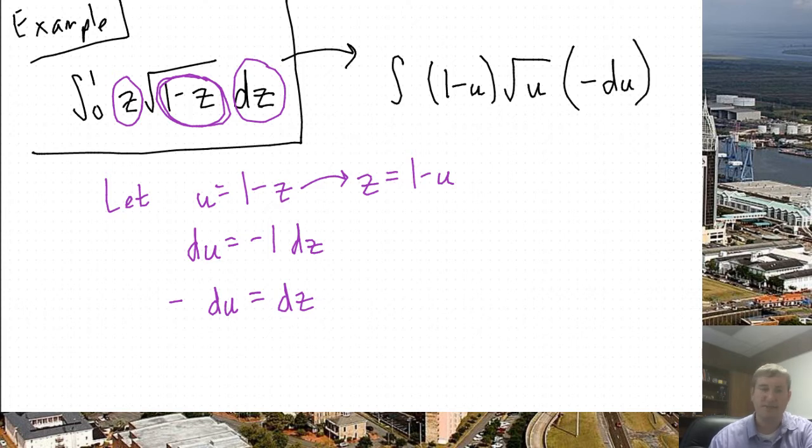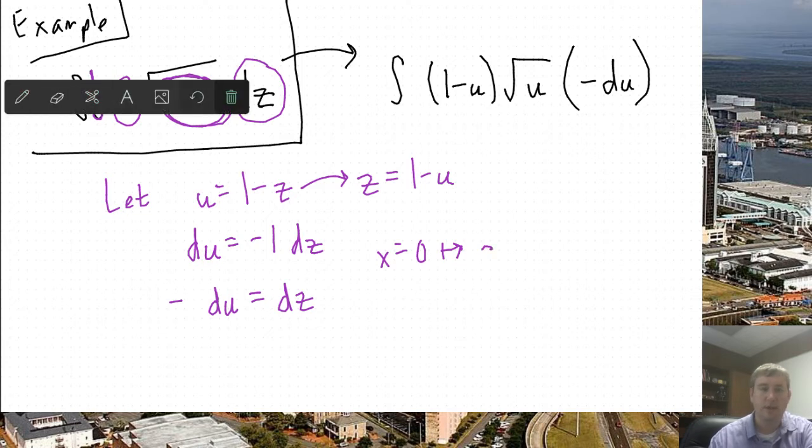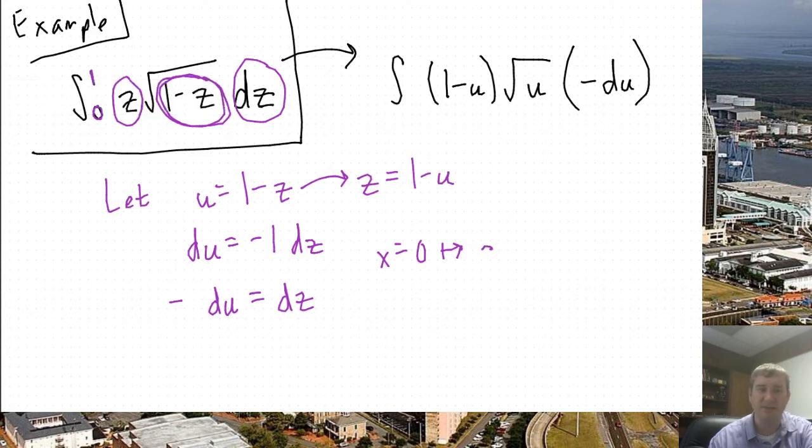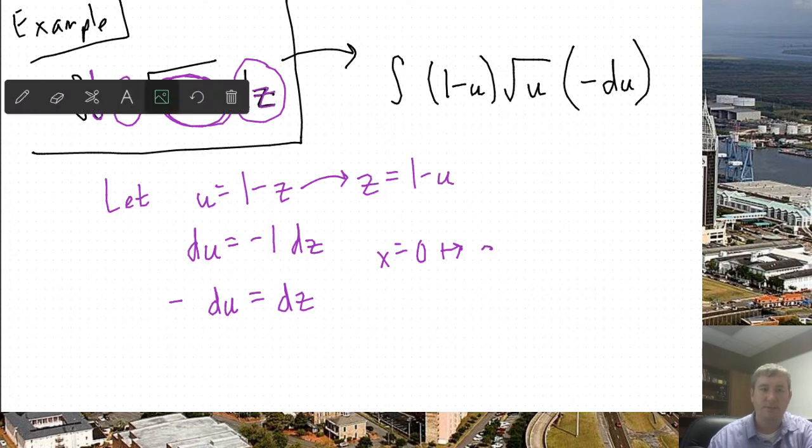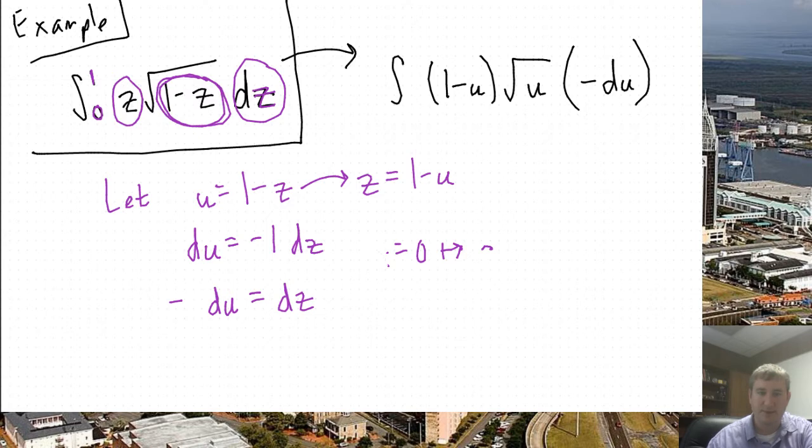What else am I missing here? I need to not forget my bounds of integration. I have a 0 and a 1. So those are not x bounds, they are z values given by the original problem. So let's fix that. z equals 0 becomes, the formula is u equals 1 minus z is 0. So that's u equals 1. And we have to make sure we put that at the correct place. Since the 0 is on the bottom, the 1 will be on top. Finally, if z is equal to 1, then u is equal to 1 minus 1, which is 0.